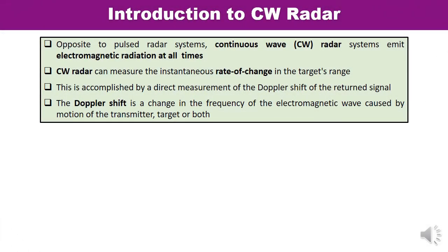To start with, let us revise what CW radar is. We have already studied about pulse radar — pulse radar transmits pulses, while continuous wave radar emits electromagnetic radiation at all times. CW radar can measure the instantaneous rate of change of target range, and this is done by direct measurement of the Doppler shift of the received signal. Continuous wave radar is based on the principle of the Doppler shift.